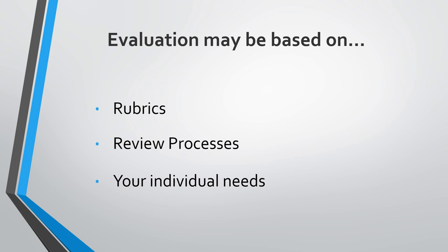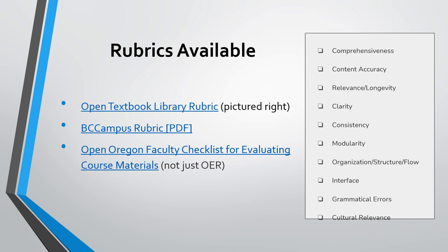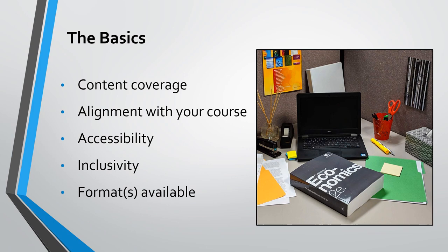There are several pre-existing rubrics available. The one on the slide is from the Open Textbook Library, but the others are just as useful. The basic elements to consider in evaluation — though this is by no means an exhaustive list — include content coverage, alignment with your course, accessibility, inclusivity, and formats available. You might also consider currency, accuracy, adaptability, and clarity or comprehensibility.